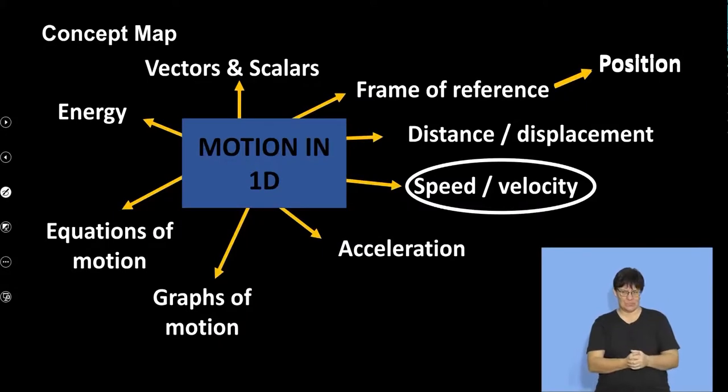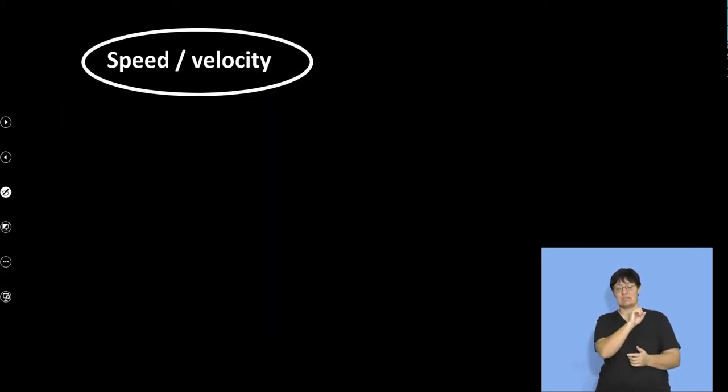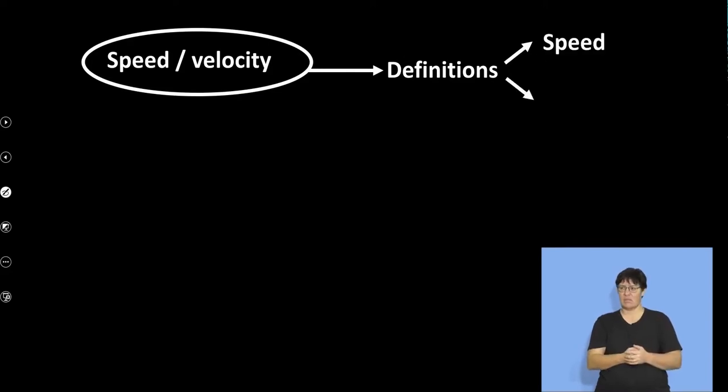So let's look at speed and velocity. First of all, we need to define these two concepts. Okay. So we're going to define what is speed, what is velocity. One is a scalar. One is a vector. We've done that.